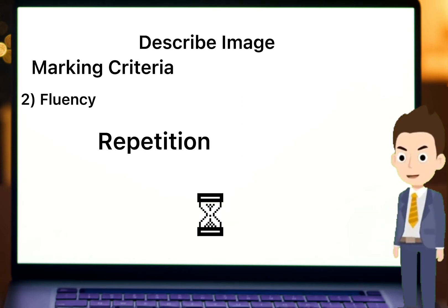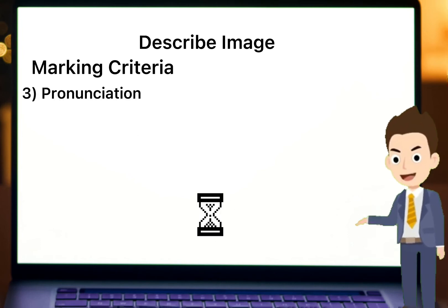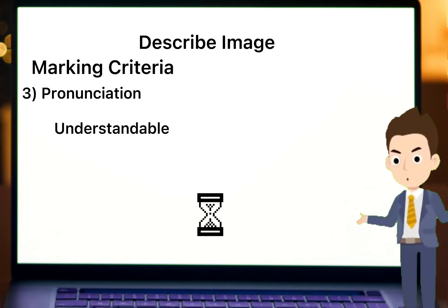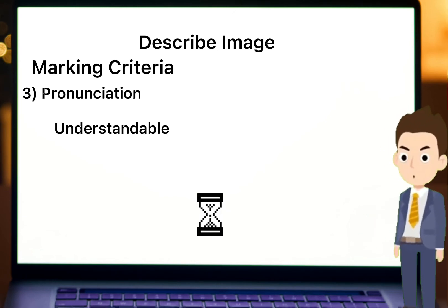Teesre number pe pronunciation hai. PTE check karta hai ke description understandable hai ya nahi. Har word sahi tarah se ada kiya ya nahi. Description ko ek normal insan samajh sakta hai ya nahi. Clear aur saaf description deni chahiye. Filler sounds jaise shh, hmm, etc. nahi hone chahiye. Ye sab marking ko affect karte hain.